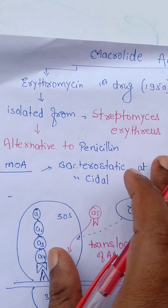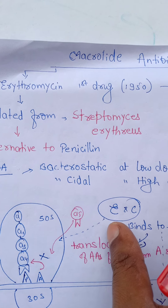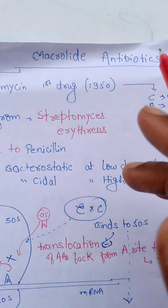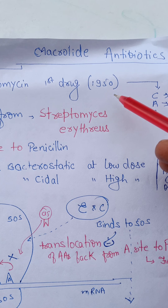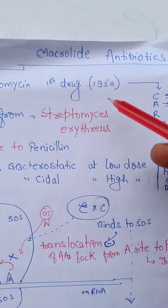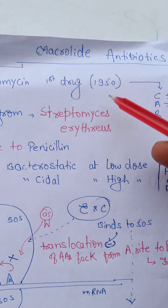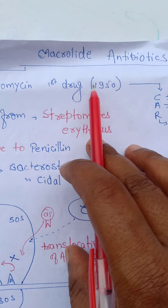Erythromycin is alternative to penicillin because penicillin causes various hypersensitivity reactions in some persons. Thus, those persons who are highly sensitive to penicillin, they are given erythromycin. Erythromycin was the first drug used in 1950.